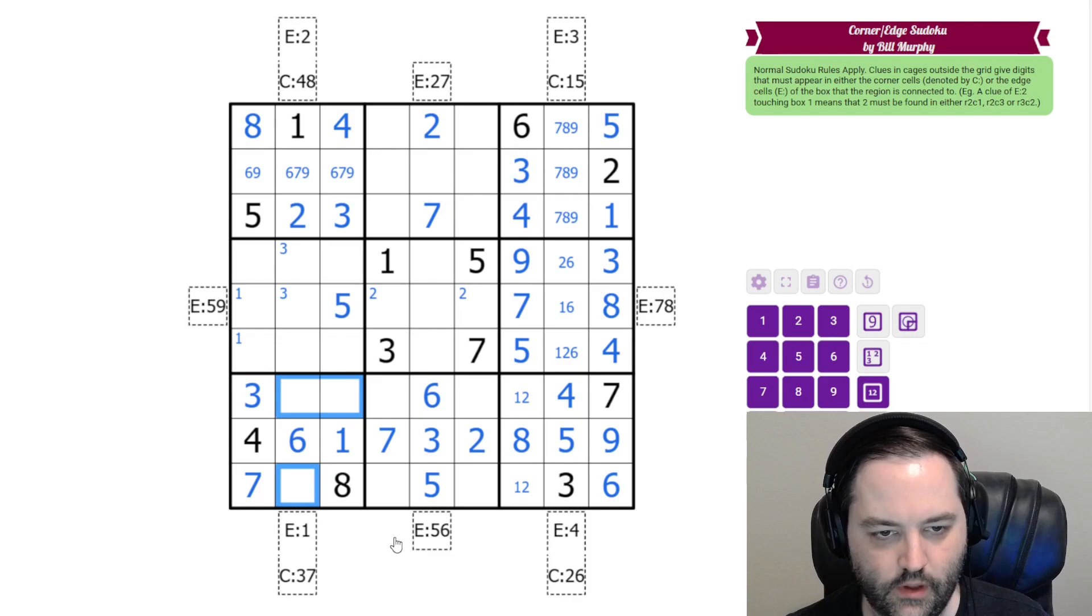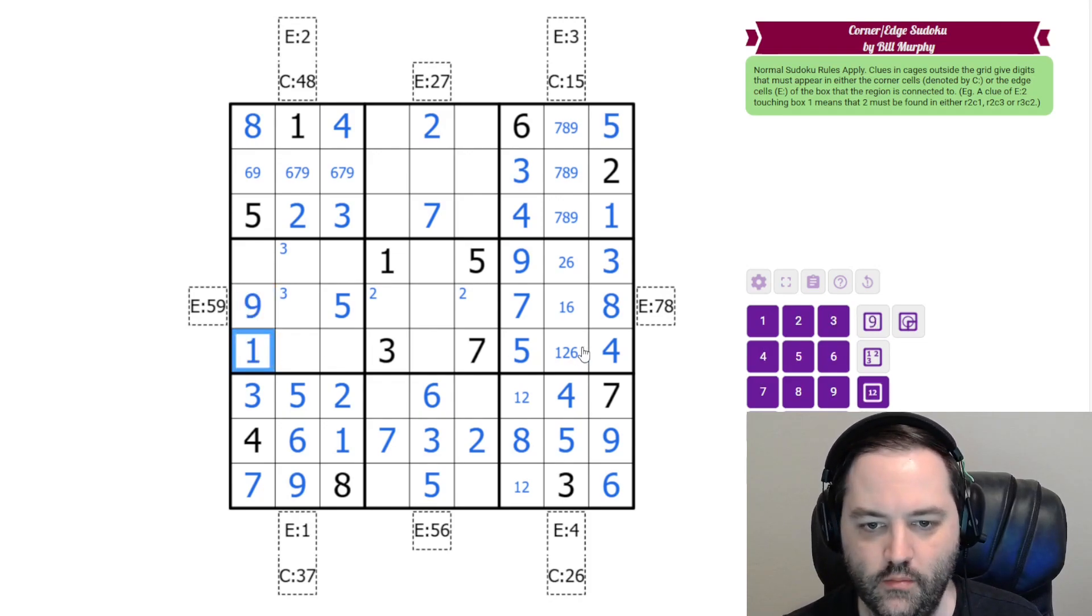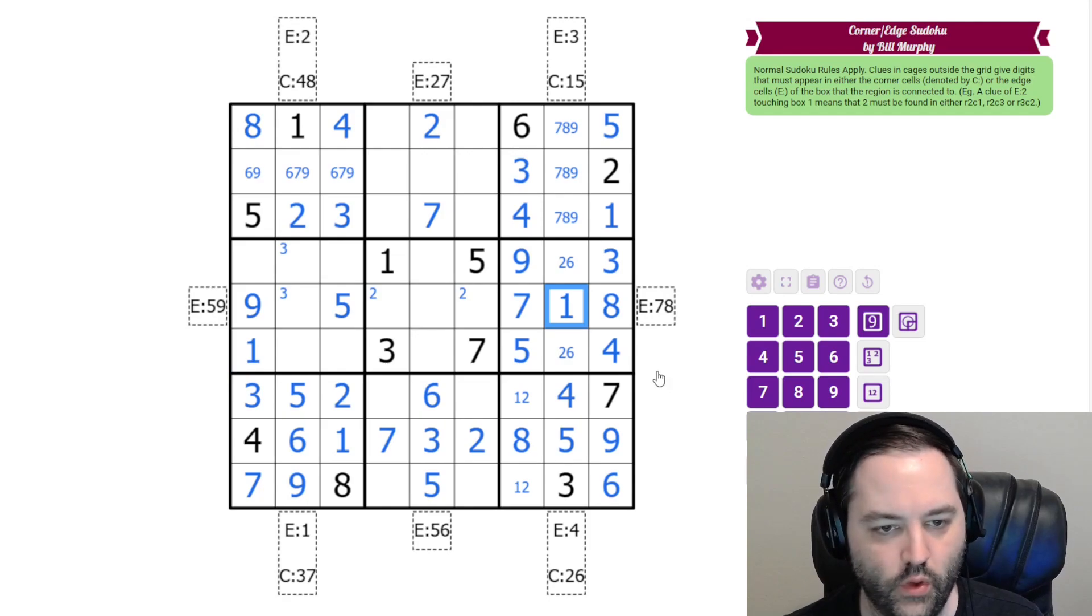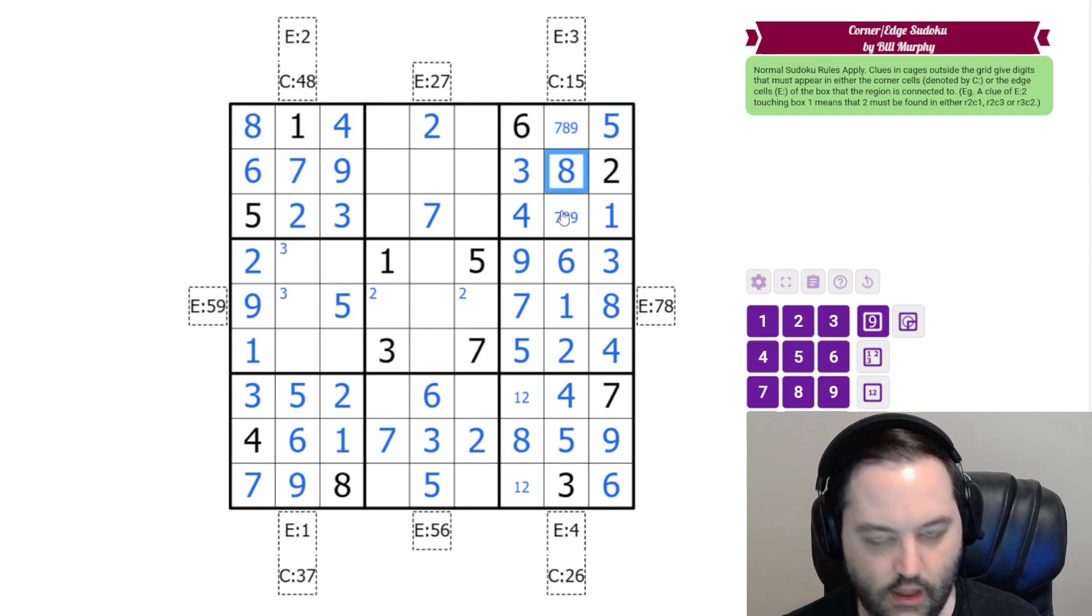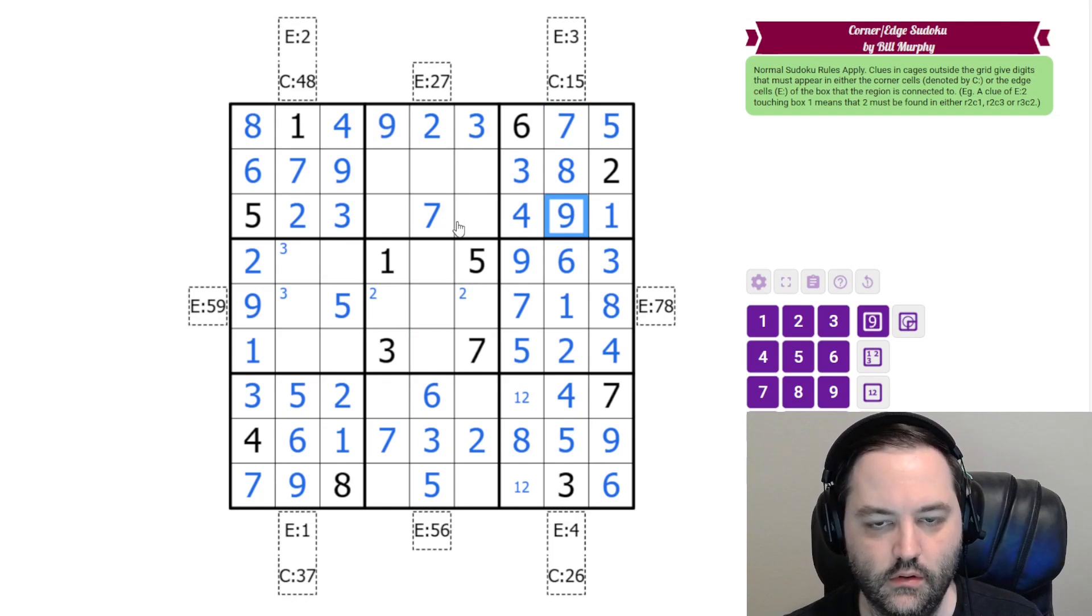In this box, we need 2, 5, and 9. 5 can only go here. 2 can only go here. That gives us 9. And now, 9, looking up into this box, can't go in any of these edge cells, so it goes here. That gives us our 1. That's not 1, so this is the only place for 1 in box 6. The 9 gives us 6 and 2. Which resolves 6 and 2 here. 6 and 9 give us 7, 9. 8 over here. Up here, we still need a 3, and we have a given 3. And that can't be 7, so 7, 9 are resolved. This is a 6, 8 pair.